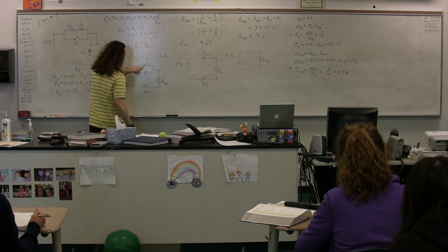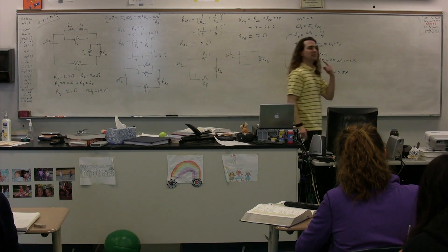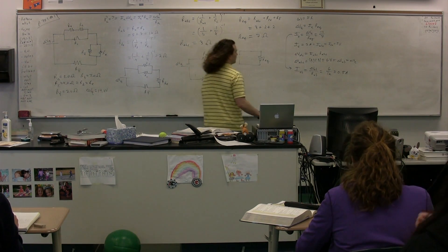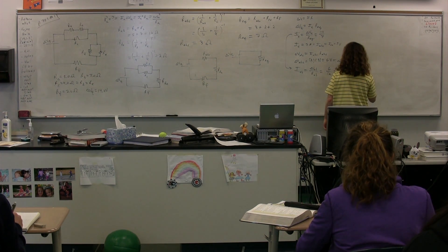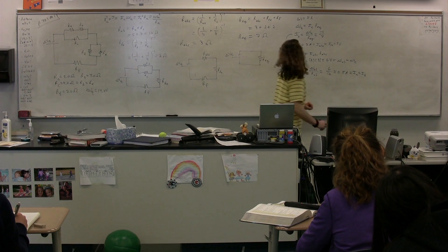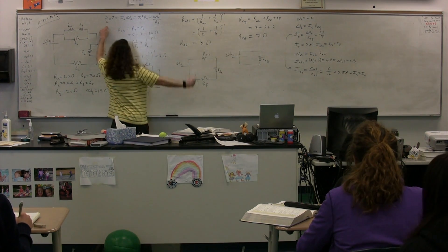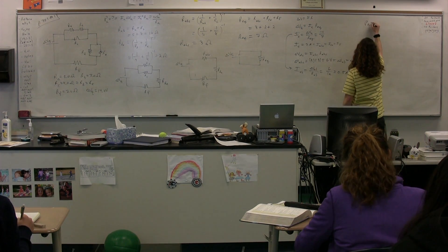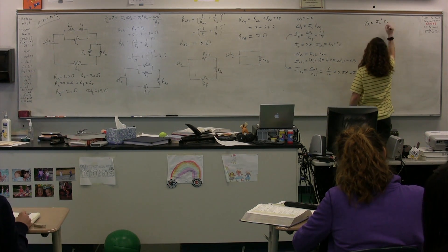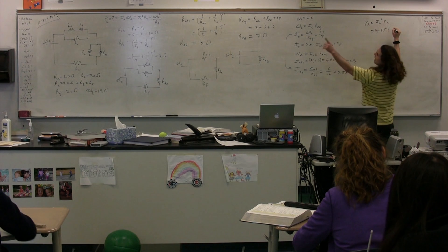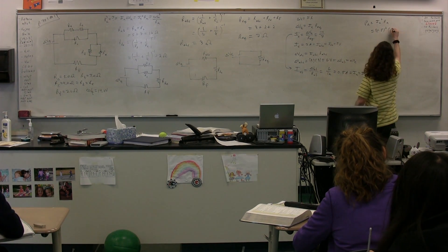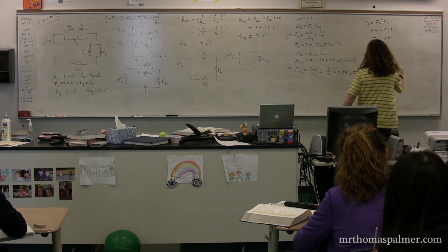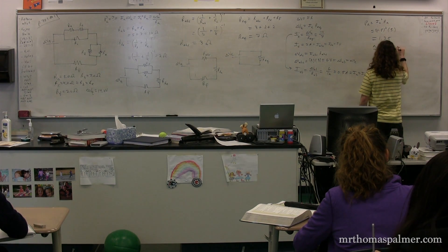We've now figured out the current through resistor AB. This is also the current through resistor A and resistor B because they are in series. Now we go back to what we were originally trying to find, which was power. The power dissipated by resistor A is equal to current through A squared times the resistance of A — that's 0.5 squared times 5, which gives 1.25. With two significant figures, that rounds to 1.2 watts.